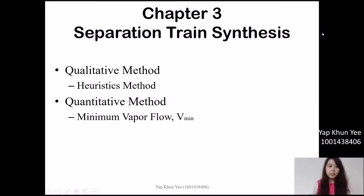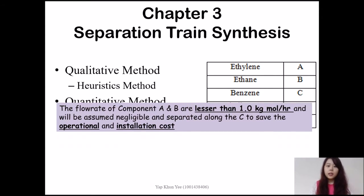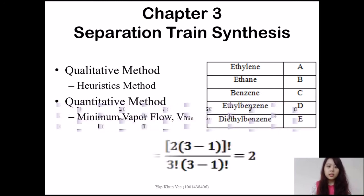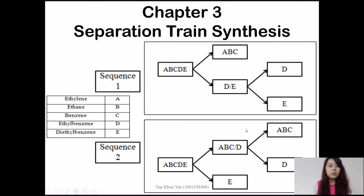Hello everyone. My name is Yap Kuni. I am going to talk about chapter 3, separation train synthesis. There are 2 methods used: qualitative method and quantitative method. Qualitative method is the heuristic method, quantitative method is minimum vapor flow or V minimum. There are 5 products produced: ethylene, ethane, benzene, ethyl benzene, and diethylbenzene. Due to low flow rate of component A and B, less than 1 kg mole per hour, they are assumed negligible and separated along with C to save operation and installation cost.